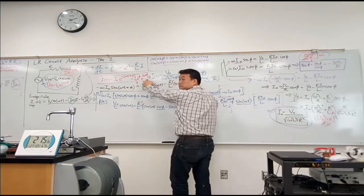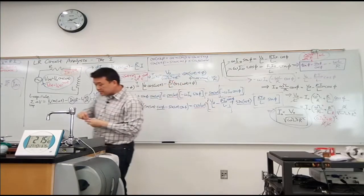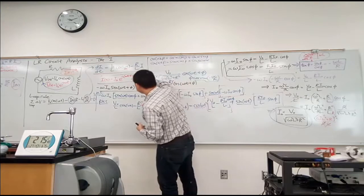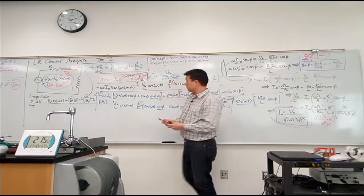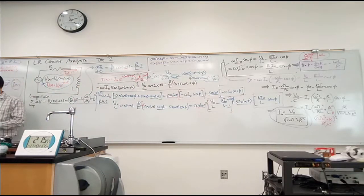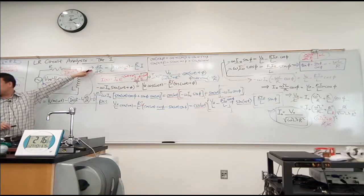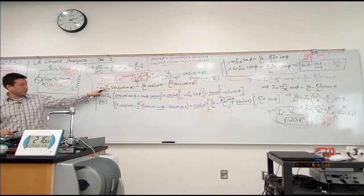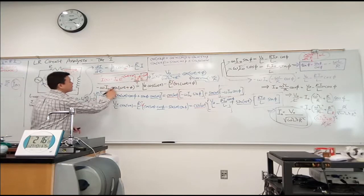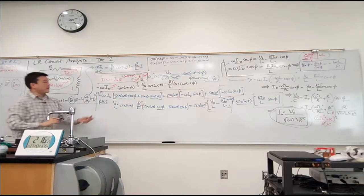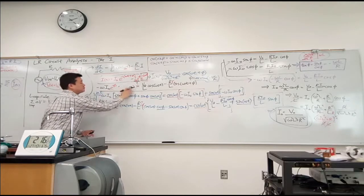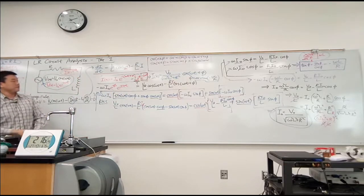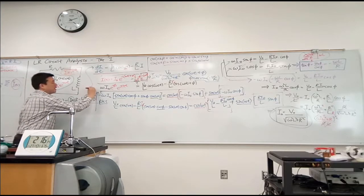This is a nicer expression because I have a very simple-looking time-dependent function, and this is now just a simple constant. This alone will save a lot of unnecessary work. So let me plug this into my differential equation and rewrite my left-hand side. My left-hand side will have i naught times e to the i phi. When I take the derivative of the complex exponential e to the i omega t, from the chain rule I get a factor of i omega — so instead of minus omega, I get a factor of i omega here.